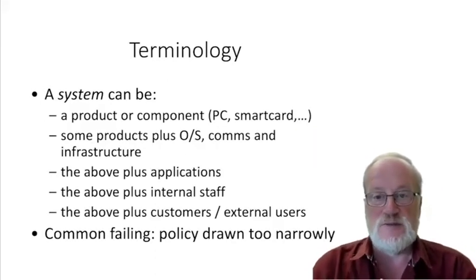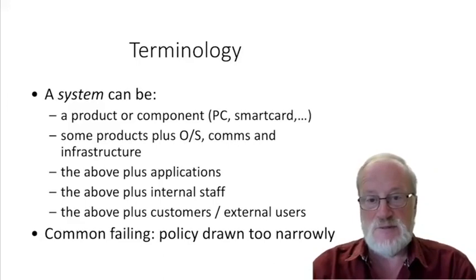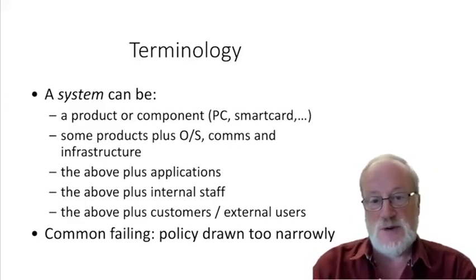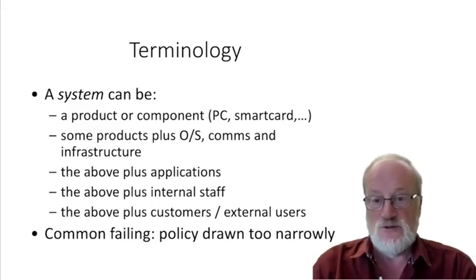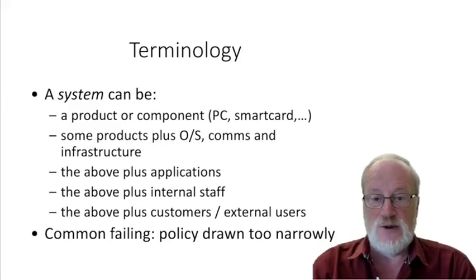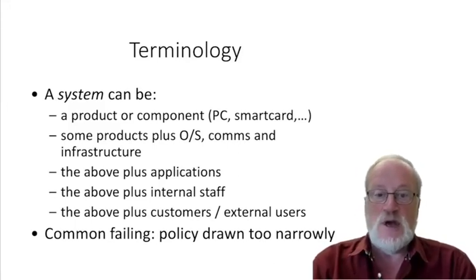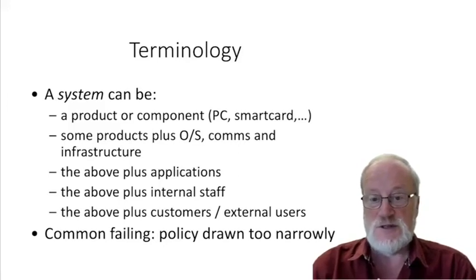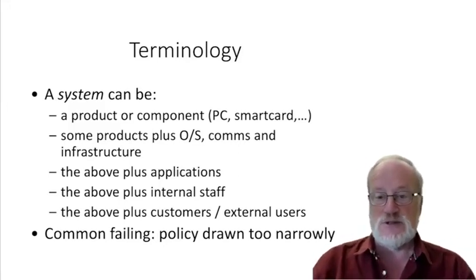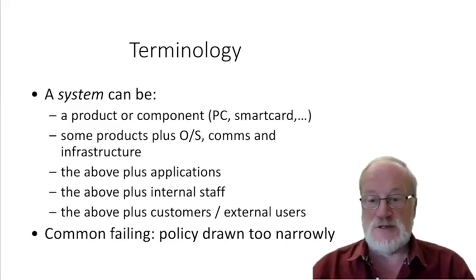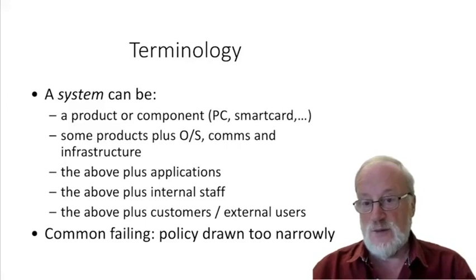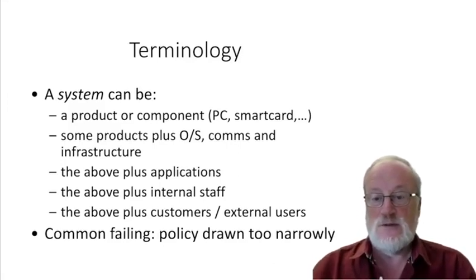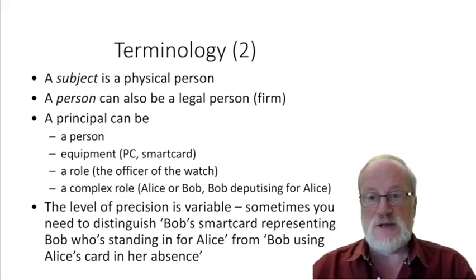Let's tidy up some terminology. When I talk about a system I might be referring to a product or component such as a PC, smart card, or phone; products plus operating system, comms, and infrastructure; above plus applications; above plus internal staff; or above plus customers and external users. A common failing is that people draw policy too narrowly — thinking only of the hardware and ignoring the OS, applications, or the people.